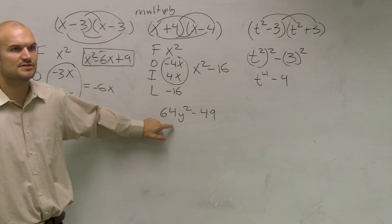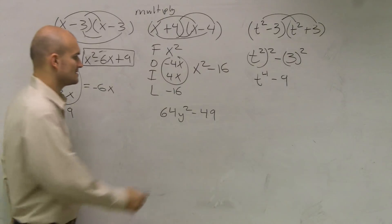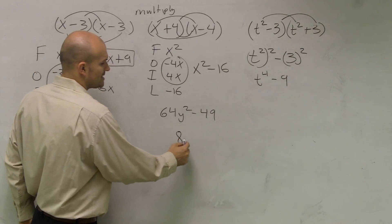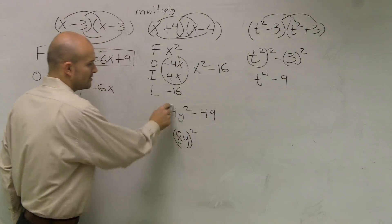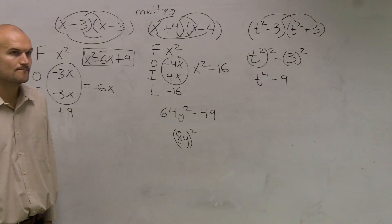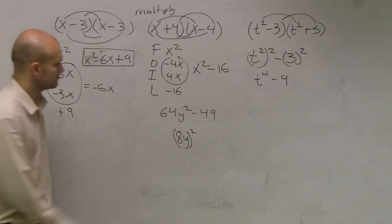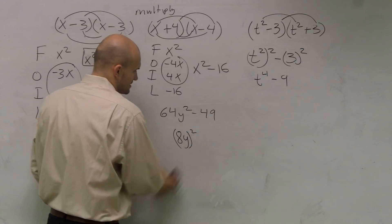Can you rewrite 64 as something squared? Yes. What squared number gives you 64? Eight. So could you write it as eight and then y? Eight y squared. Will that give you 64 y squared?